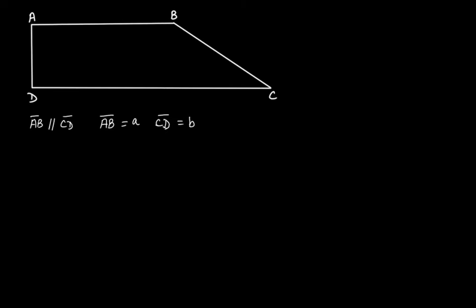Now, if we take vertex B and draw a perpendicular line from this vertex on the line segment CD of the trapezium, then let's say that it intersects at a point L. Let's say that this height BL has length H. If BL is H and BL is making 90 degrees with CD, then AD will also be equal to H, because these two will be parallel and equal in length. So BL is H, therefore AD will also be of length H.